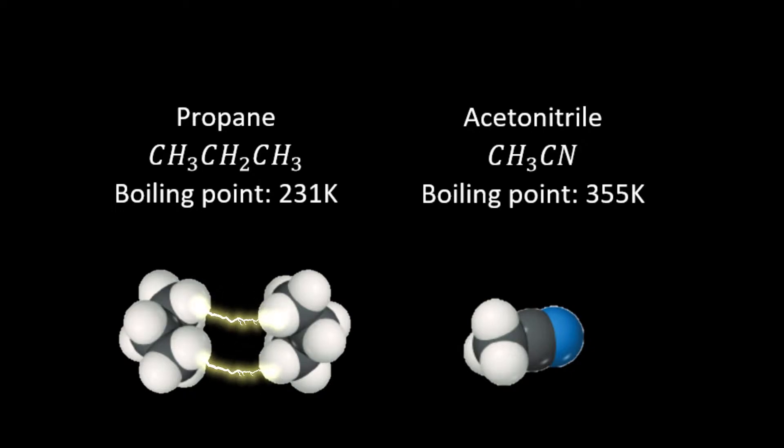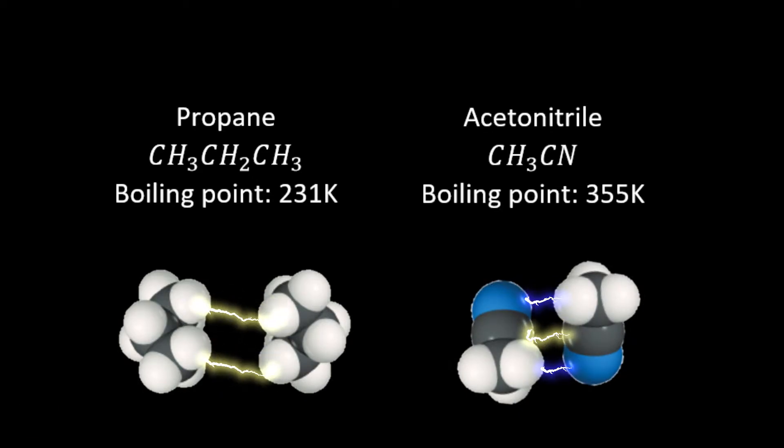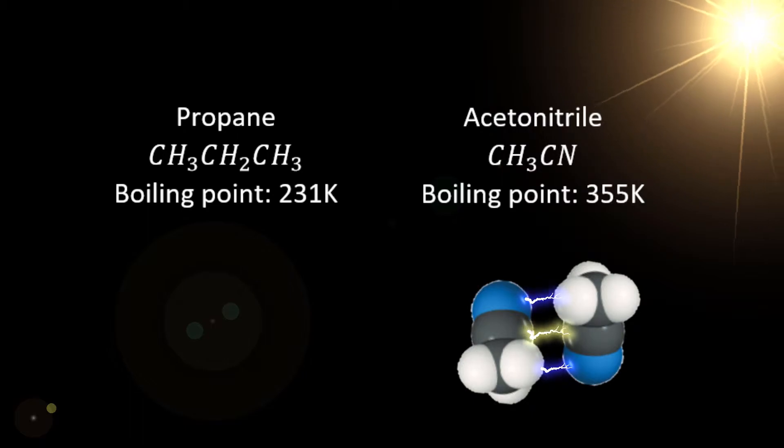Acetonitrile, on the other hand, is very polar, and has the combined effects of dispersion forces and dipole-dipole interactions. This means more energy has to be supplied in order to break these attractions, hence the higher boiling point of 355 Kelvin, or 82 degrees Celsius.